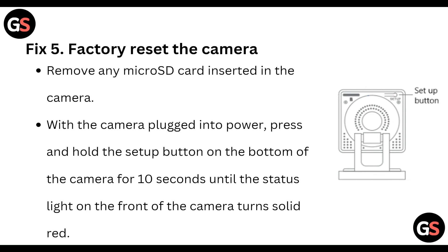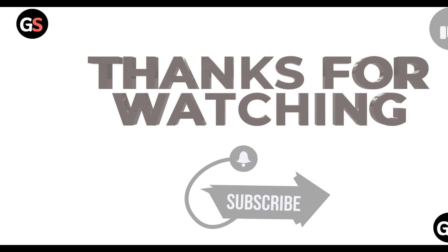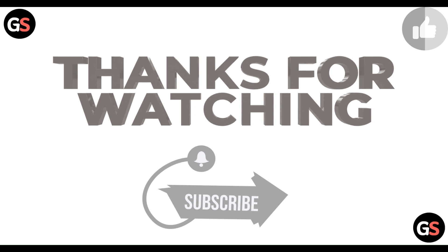The fifth step is a factory reset. Remove any micro SD card inserted in the camera. With the camera plugged into the power, press and hold the setup button on the bottom of the camera for 10 seconds until the status light on the front of the camera turns solid red. That covers all the steps — thanks guys, have a nice day, and don't forget to subscribe to our YouTube channel.